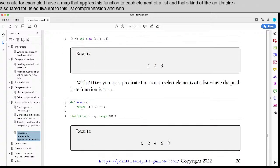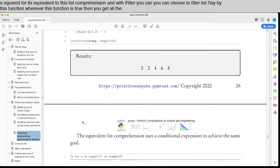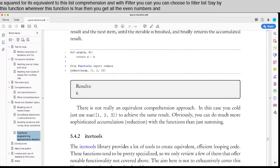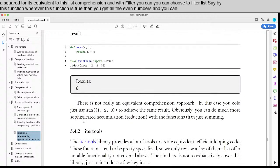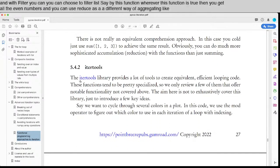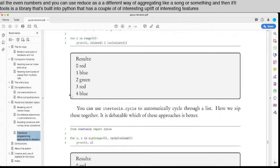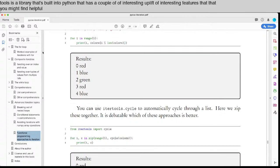And with filter, you can choose to filter a list, say by this function, wherever this function is true, then you get all the even numbers. And you can use reduce as a different way of aggregating, like a sum or something. And then itertools is a library that's built into Python that has a couple of interesting features that you might find helpful for that.